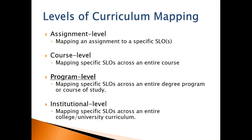If you're talking about mapping at the assignment level, you're mapping an assignment to specific learning outcomes — the classic example being a rubric for evaluating a student project or essay. At the course level, you're mapping the learning outcomes students are expected to master across the delivery of a course — typically done in syllabi through week-by-week course outlines. At the program level, you're mapping student learning outcomes across an entire degree program. At the institutional level, you're doing that at the macro level, typically within general education.